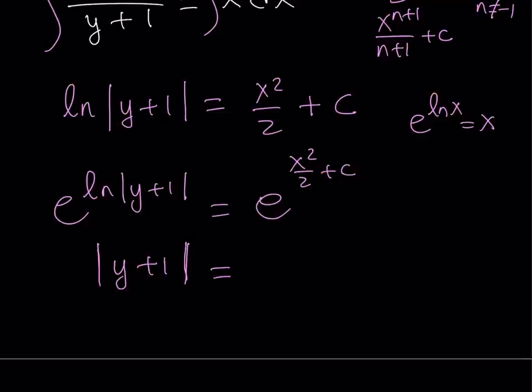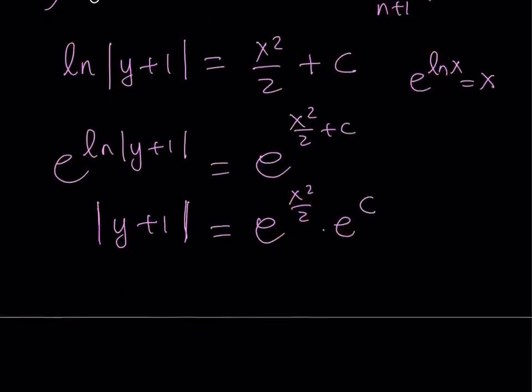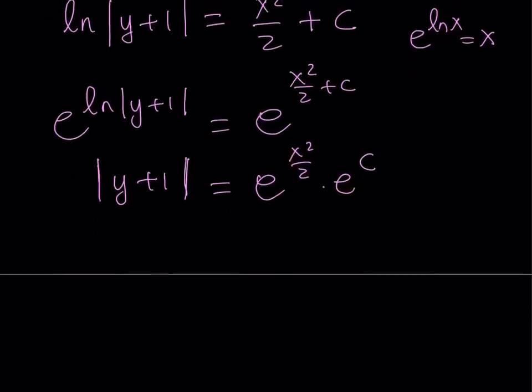But notice that the exponents are added. So, I can just go ahead and separate the exponents and write it like this. Right? When we multiply two powers with the same base, we add the exponents. Here, we can just reverse the process. Okay, now, at this point, we want to use our initial condition.